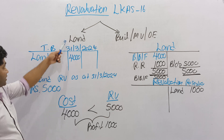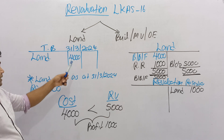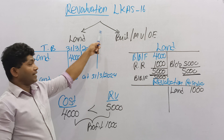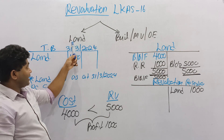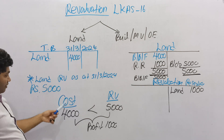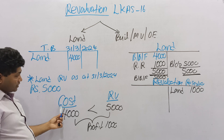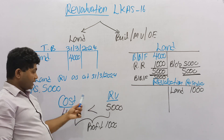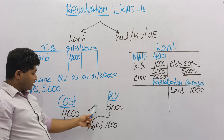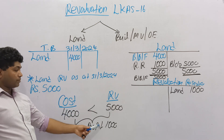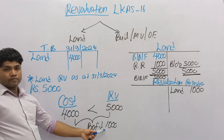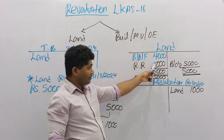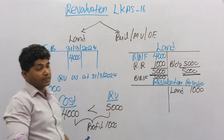Land is a non-depreciable asset — there are two types of assets: depreciable and non-depreciable. Since land is non-depreciable, we calculate revaluation profit and loss by comparing cost value with the revaluation amount. If the revaluation amount is higher than the cost value, the difference is a revaluation profit, and the effect is land increases: land account debit, revaluation reserves account credit.